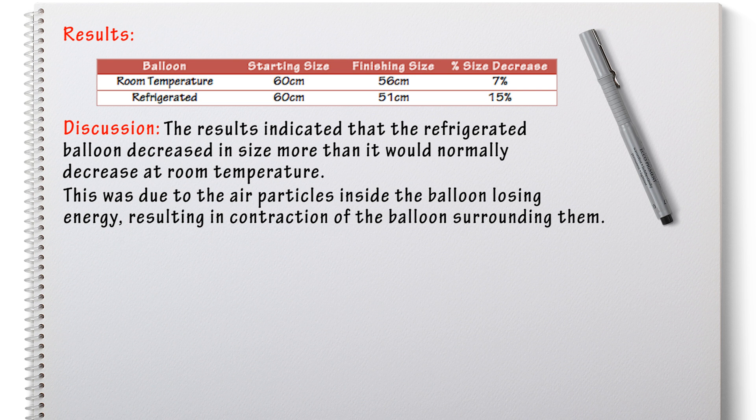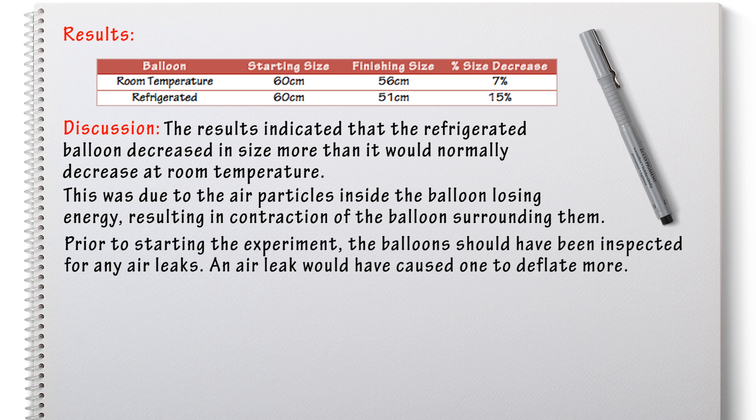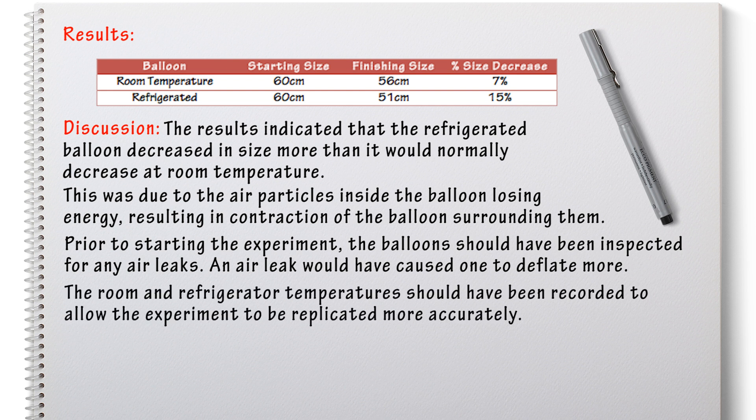This varies from teacher to teacher but sometimes in your discussion you can talk about the limitations in your experiment. So what are some things that might have affected your results and how can you overcome those in the future? You may also want to discuss some ways you can improve the experiment as a whole. So how could you do things more efficiently or how could you do things differently or use different equipment to try and get more accurate results?